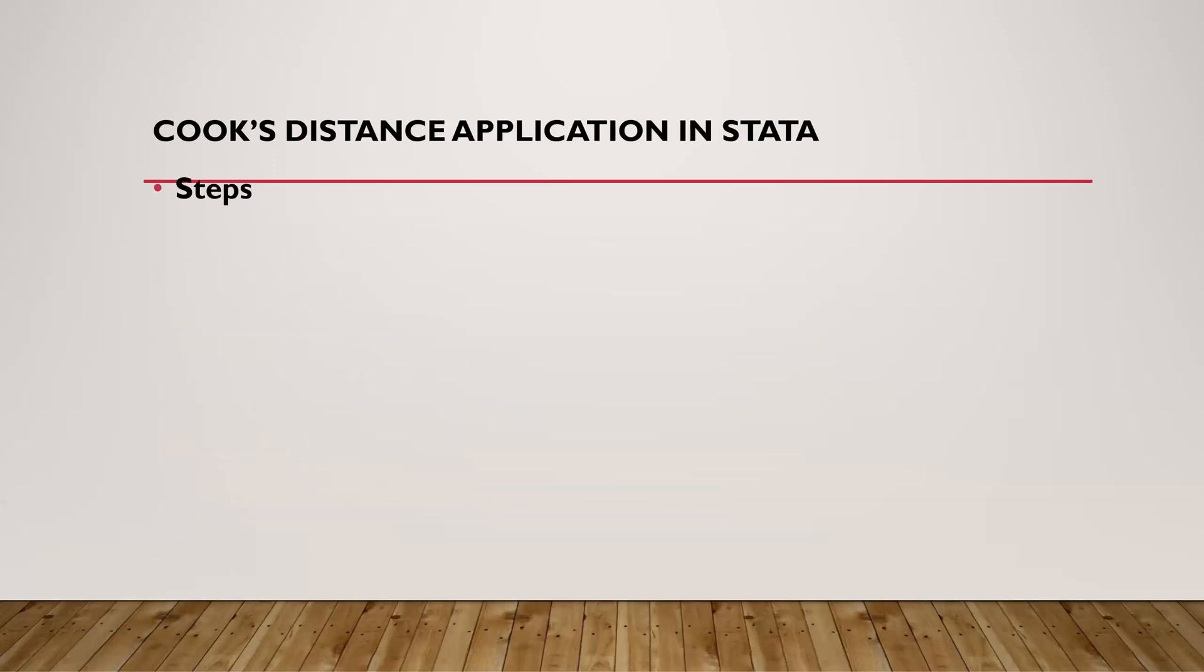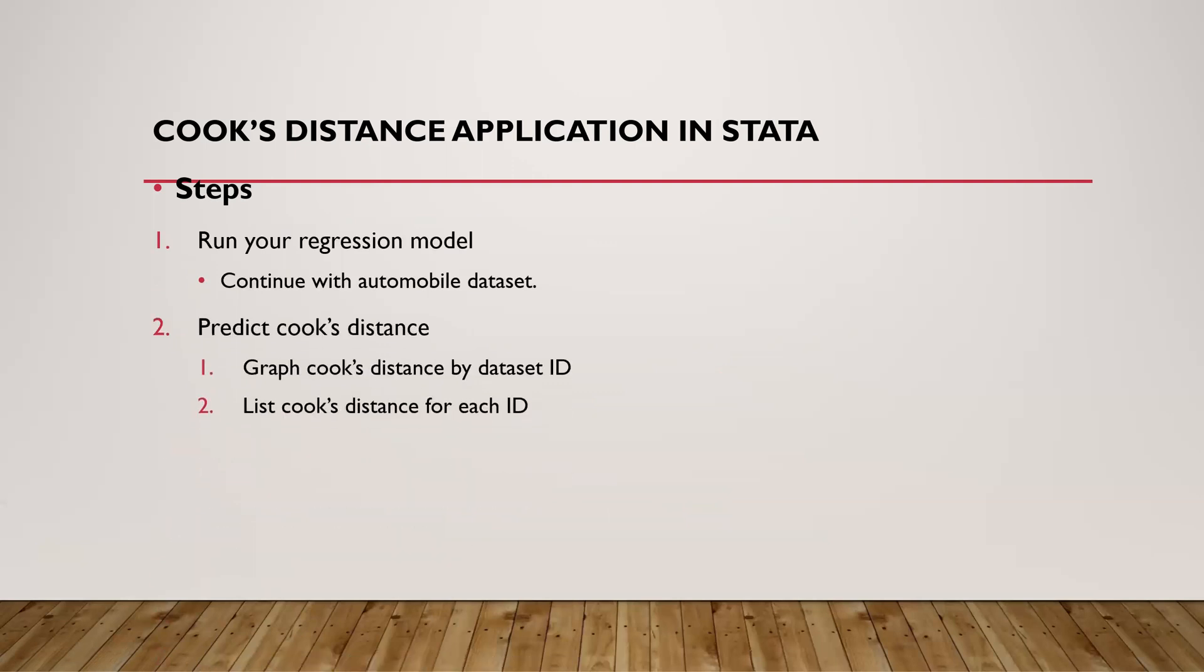How to do that in Stata? We follow these steps. First, run your regression model, and we will continue to use the automobile dataset. Then we will predict Cook's distance, and then we can graph or just list the Cook's distance value per respondent or ID. The third approach is to revise our regression model by removing some values if we detect that some influential data exists.